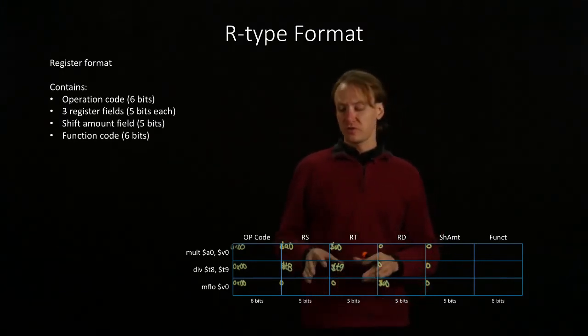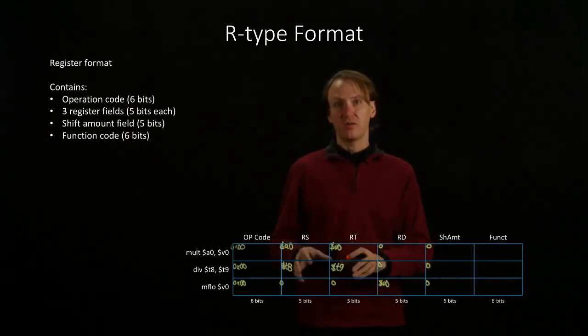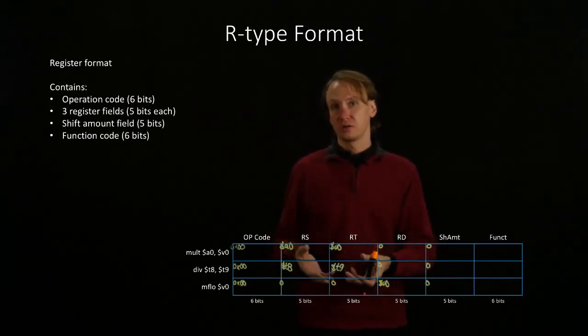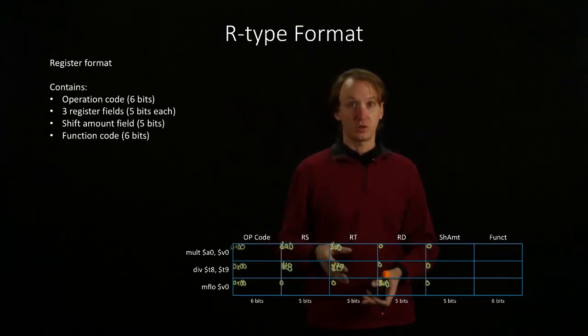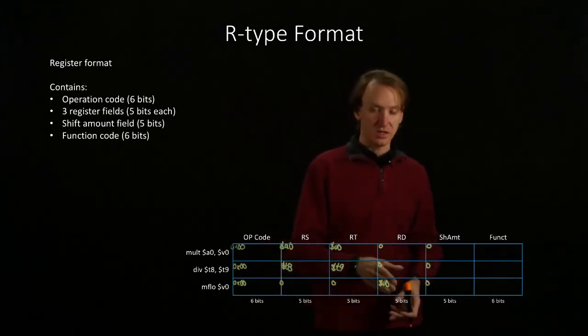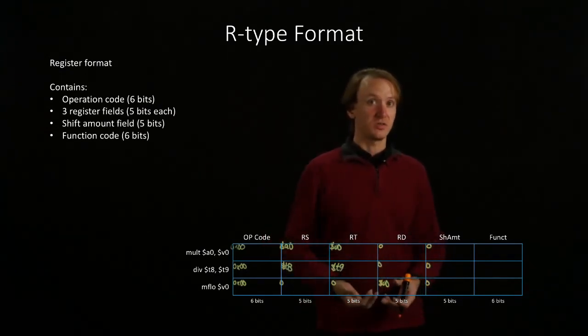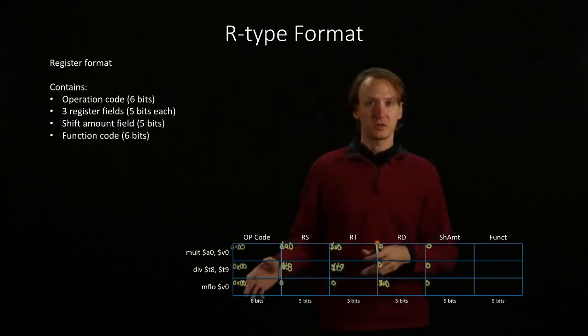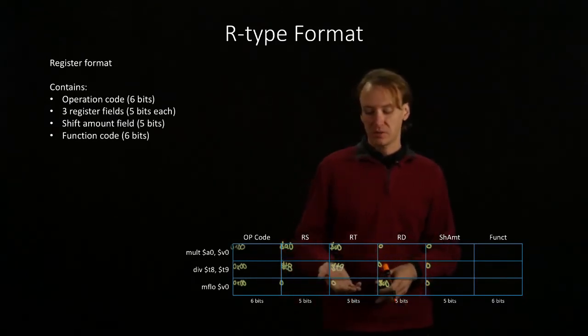So for both of these, I'm just going to put the information I have in the fields where it's relevant. Source registers go in the source register fields. Destination registers go in the destination register fields. We aren't going to mix those up just because we have some empty fields around.